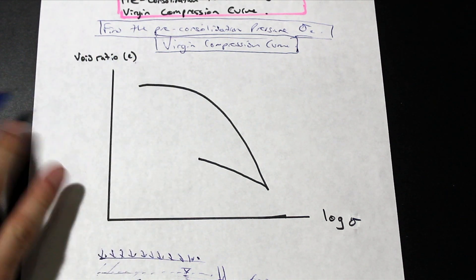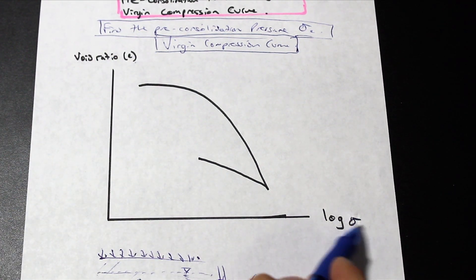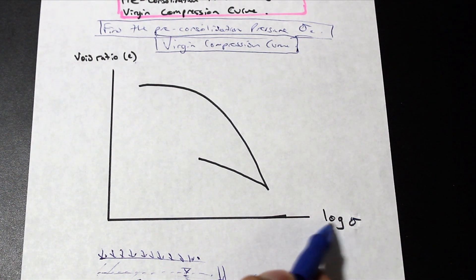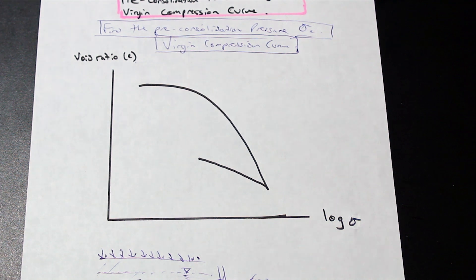This is a semi-logarithmic graph because, as you can see, in the y-axis, we don't have a log value, and in the x-axis, we do have a log value of the vertical effective stress. You may also see it written as log p. We're using log sigma right now.